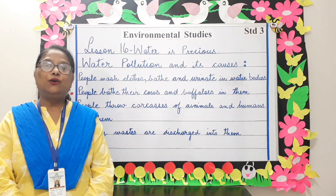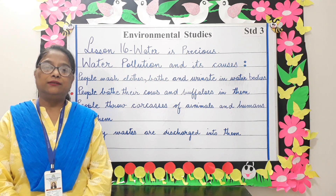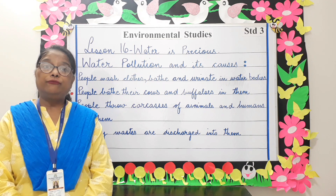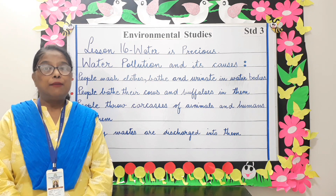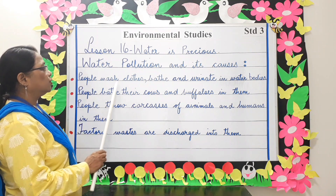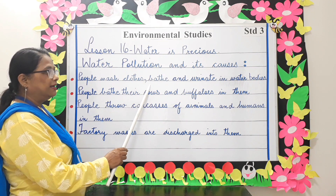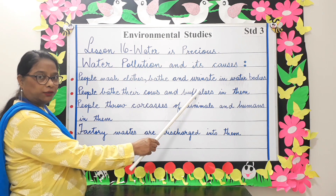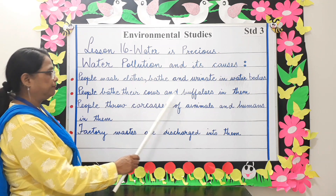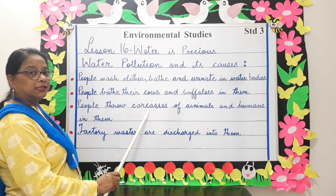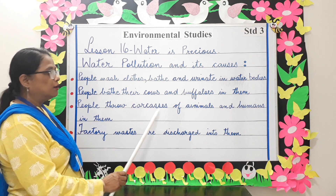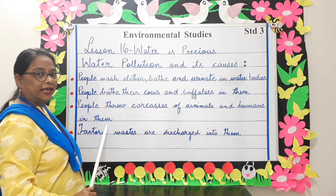Now let's look at water pollution. Water pollution is the dirtying of water bodies, and man is greatly responsible for this. People wash clothes, bathe, and urinate in water bodies. People also bathe their cows and buffaloes in them. People throw carcasses — that is, dead bodies of animals and humans — into water bodies.